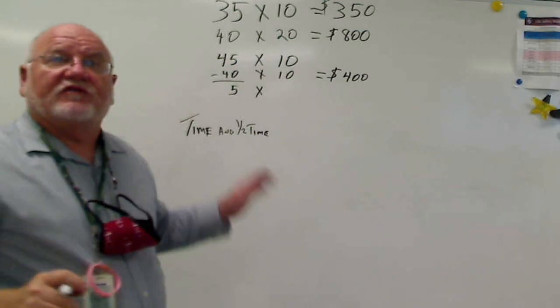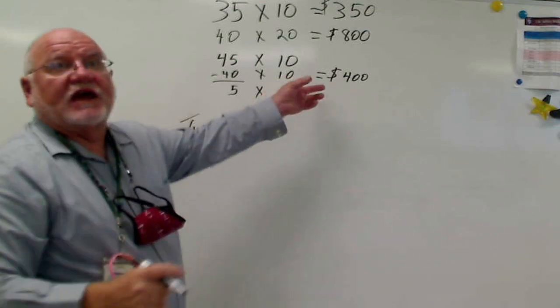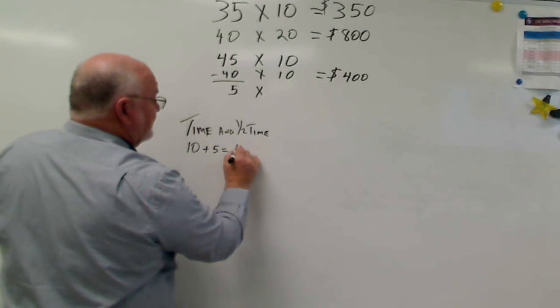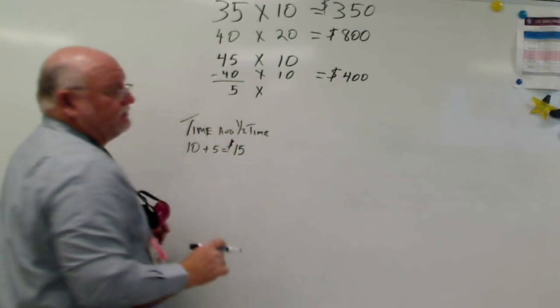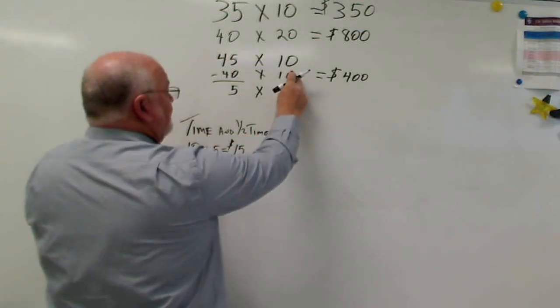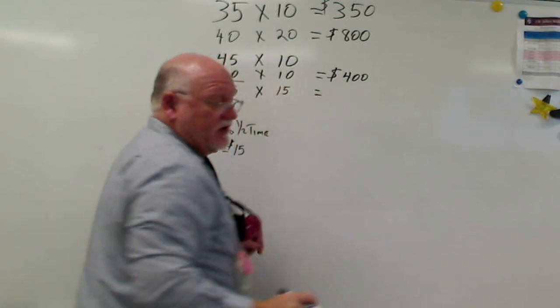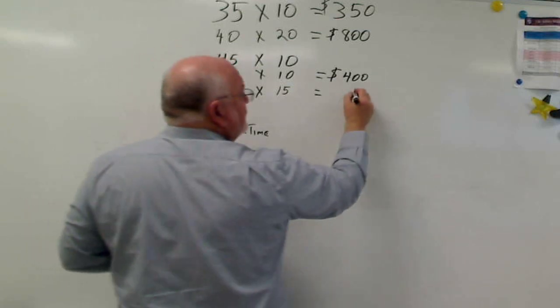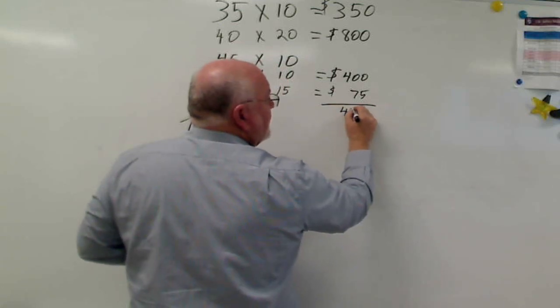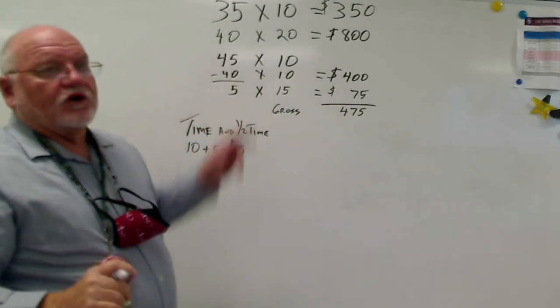Now overtime is time and a half. So let's see how that works. To figure time and a half, I've got time here of $10, and half of $10 is $5. And so time and a half in this instance is $15. So that means if I use time and a half, time and a half is $15, that means that I'm going to pay $15 there. And 15 times five is $75. And so my gross pay is $475.